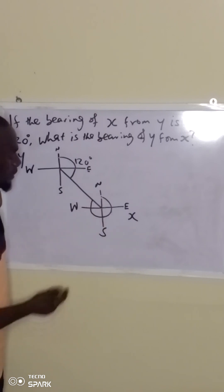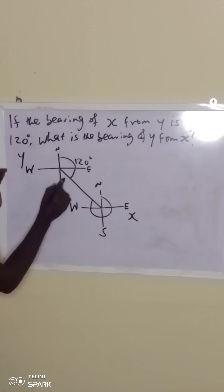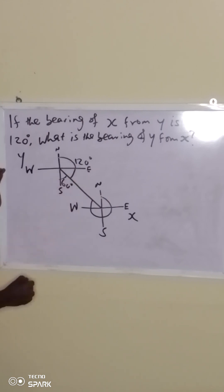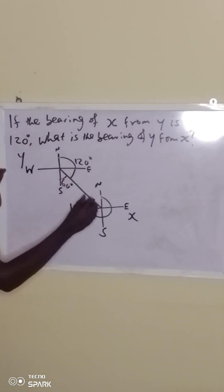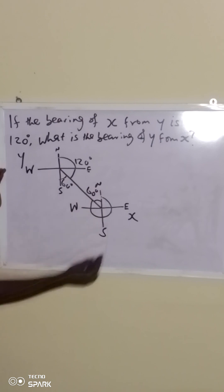And then, to get the angle, simply, we can get this angle here. From here to here is 180 degrees, angle on a straight line. Now, 180 minus 120, that means this particular angle is 60 degrees. And you can see this angle and this angle are alternate angles, 60 degrees, because these two lines are parallel.